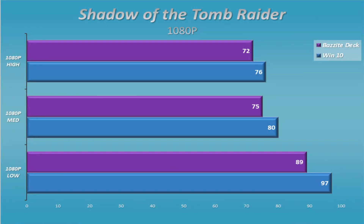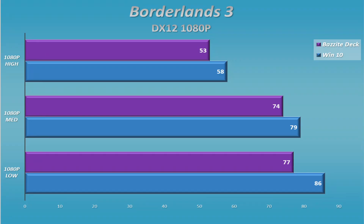Shadow of the Tomb Raider — we definitely see a little bit of an edging out with Windows. They're reasonably close, and Bazzite is still very playable. I was a little surprised to see this pattern right out of the gate. Borderlands 3 is pretty much the same story — just a little bit better on the Windows implementation, not a whole lot, but a little bit.